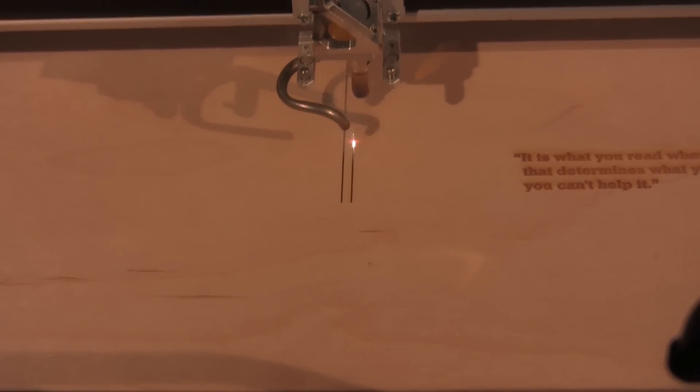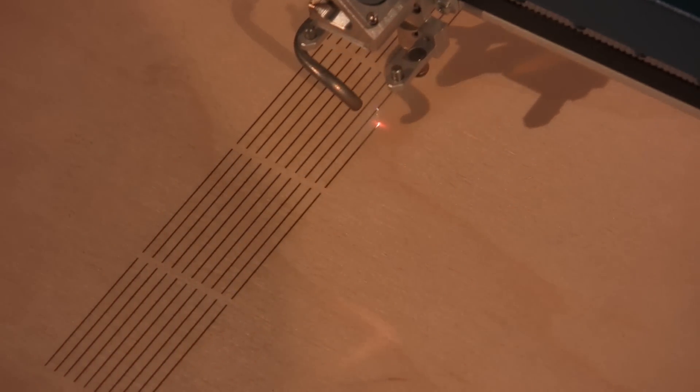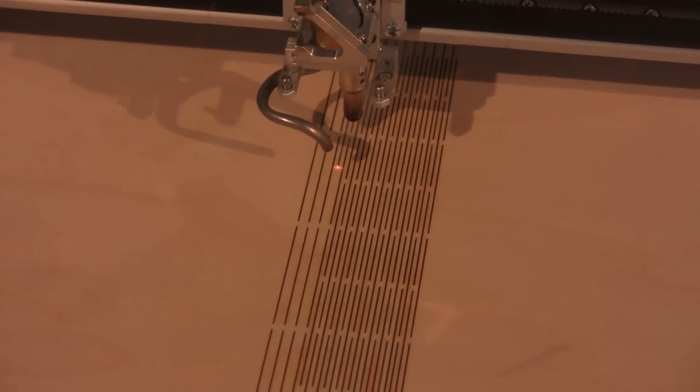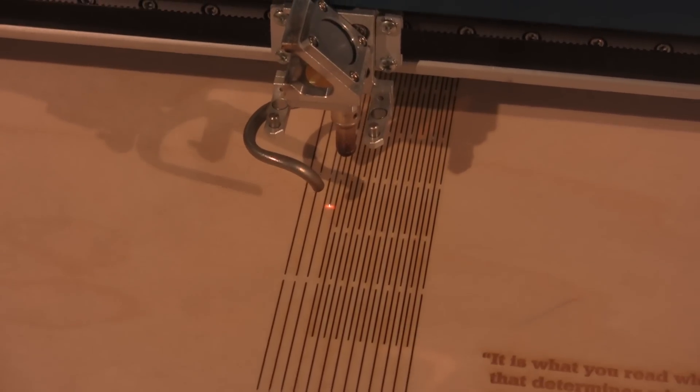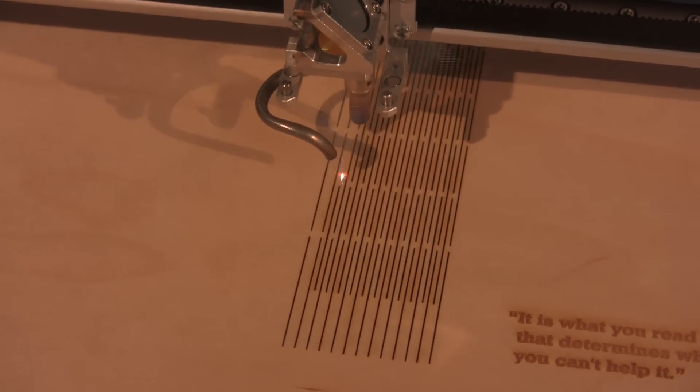After the quote is completed, the machine switches to the vector cutting part of the program. Vector files can be set to cut through thin stock. As you can see here, the machine is cutting the properly spaced slots that will become the living hinge section of the project.